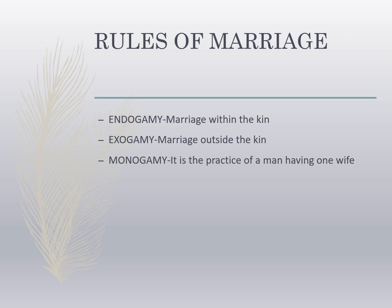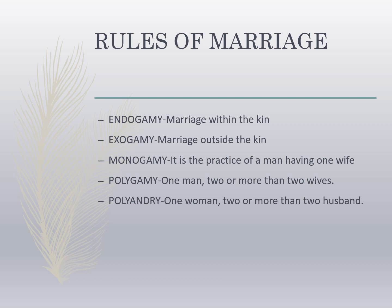Monogamy is the practice of a man having one wife. Polygamy is when one man has two or more wives. Polyandry is when one woman has two or more husbands. Examples of these practices are found in this chapter in the form of Draupadi.